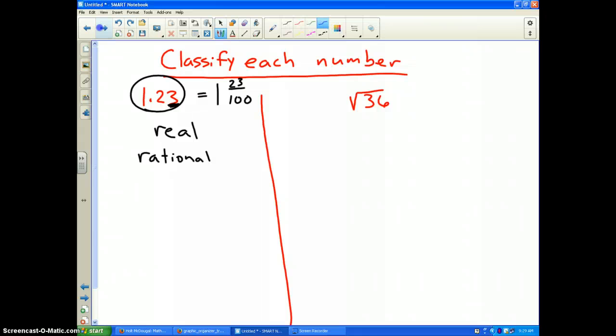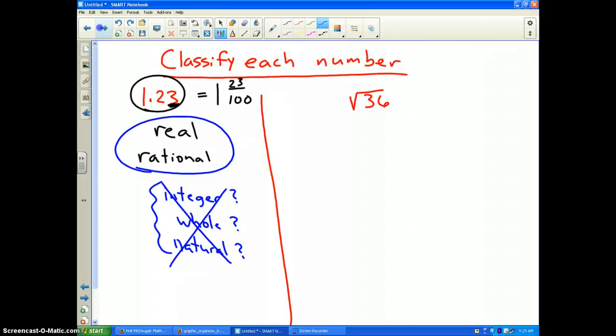Now, since it's rational, you have to consider the other three possibilities. Is this number an integer? Is it a whole number? Is it a natural number? Well, these three number systems are all numbers that do not have decimals attached to them. So very simply, none of those three apply. So therefore, your final answer, 1.23, is both real and rational.